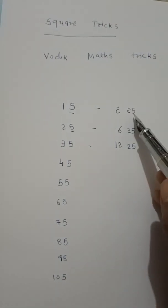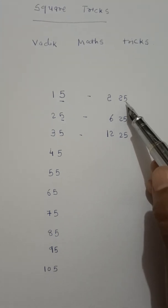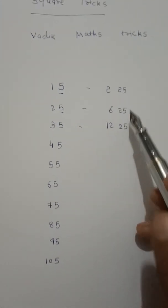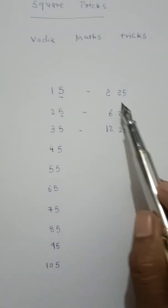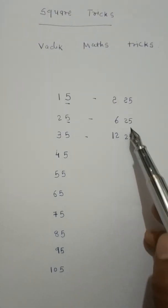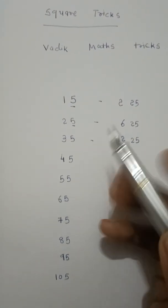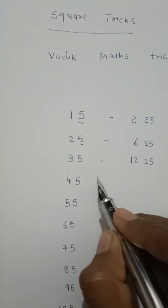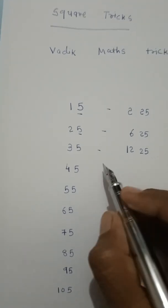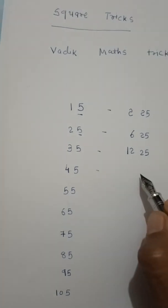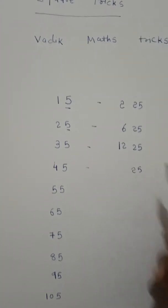5 times 5 is 25, which is compulsory. You can see first we write 25, 25, 25 in all numbers.